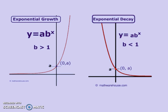Let's look at the difference between growth and decay. So for exponential growth, your b is going to be greater than 1. For exponential decay, your b value is going to be less than 1.